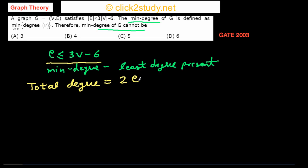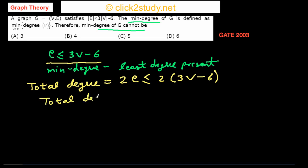I proved this in a previous video. So from 2e ≤ 3V - 6, we get that the total degree is less than 2 times (3V - 6), which gives us total degree < 6V - 12.